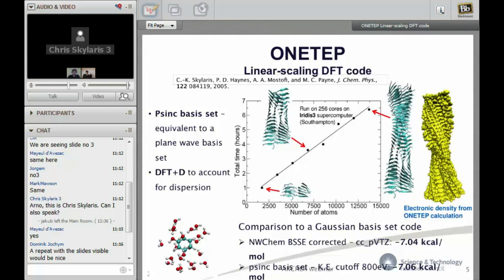ONETEP, the theory we have been developing and the code, the parallel code ONETEP, belongs to a new generation of methods where we aim to have linear scaling but also to have large basis set accuracy. The high accuracy that you obtain when you have a high resolution in which to expand your wave functions and your density.